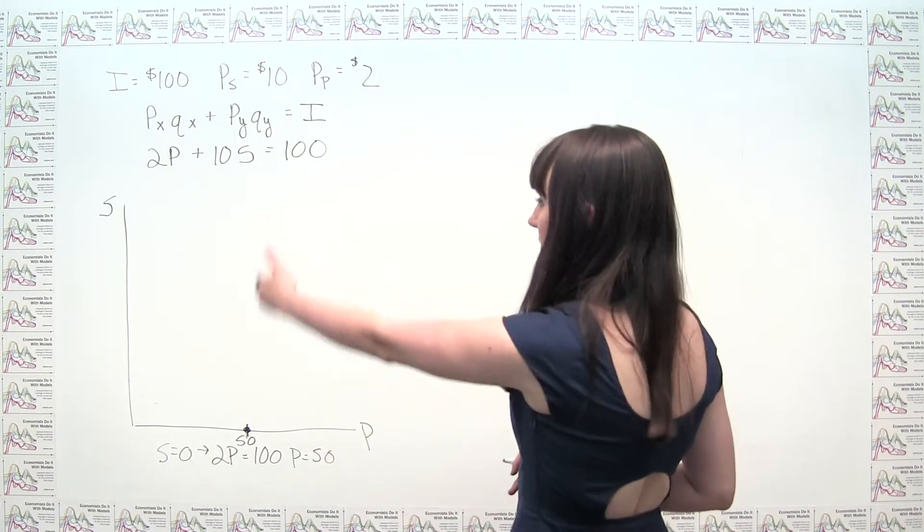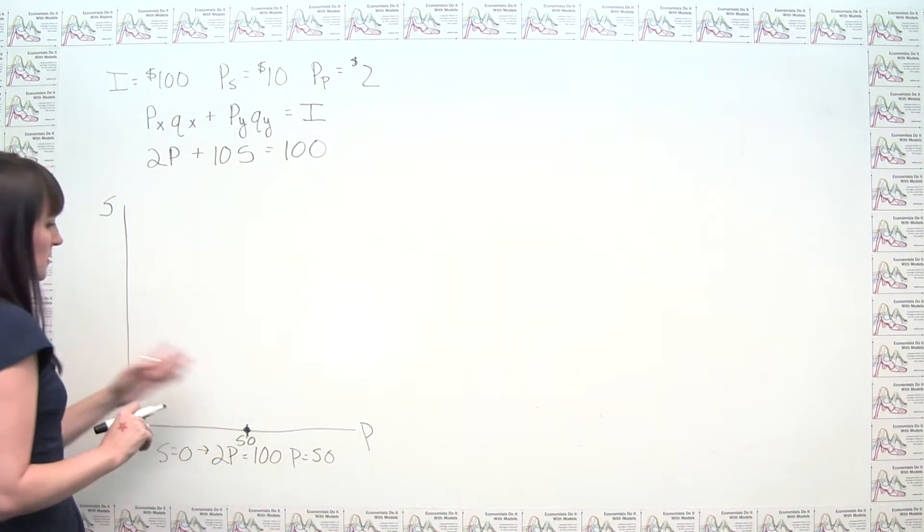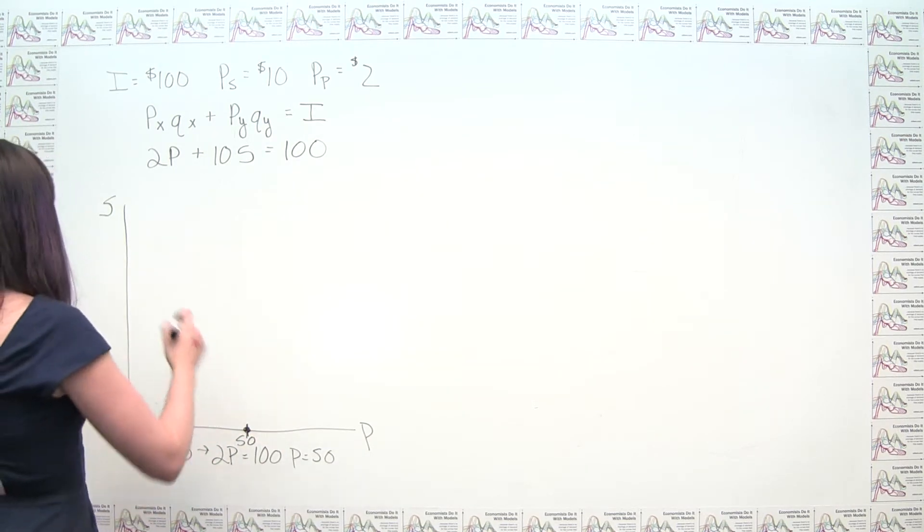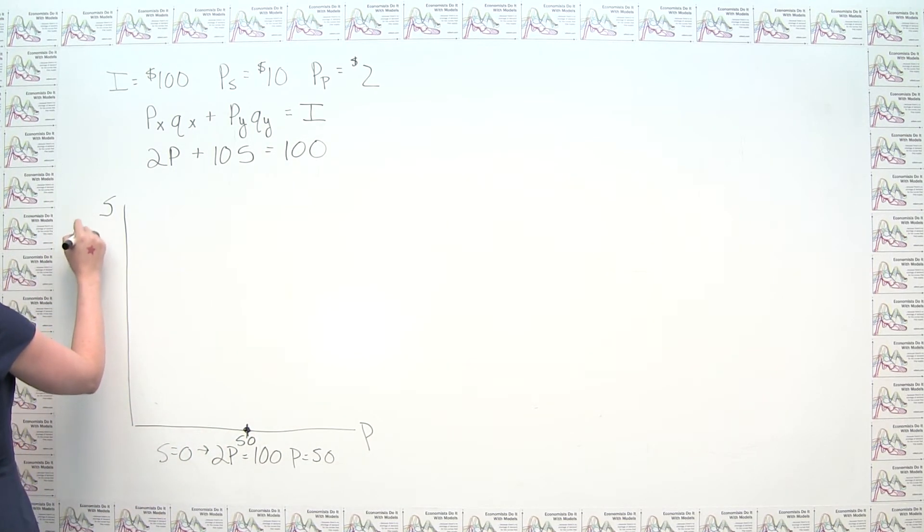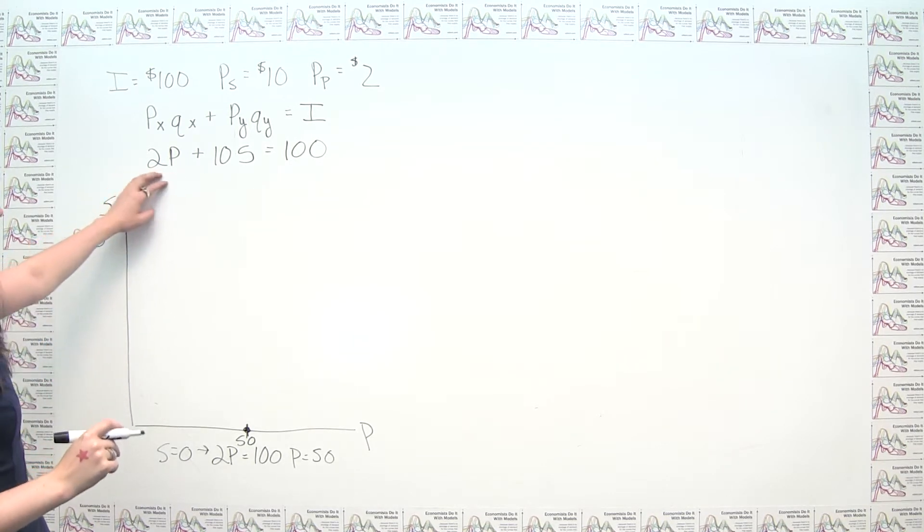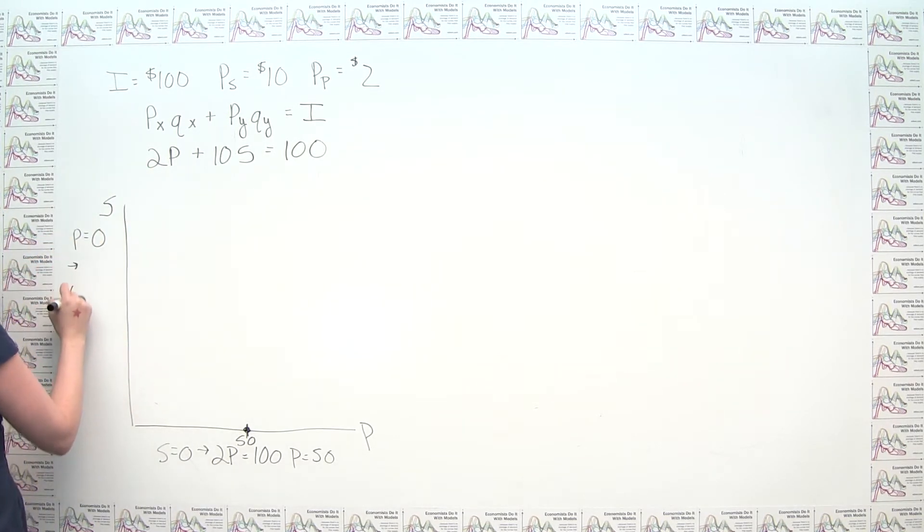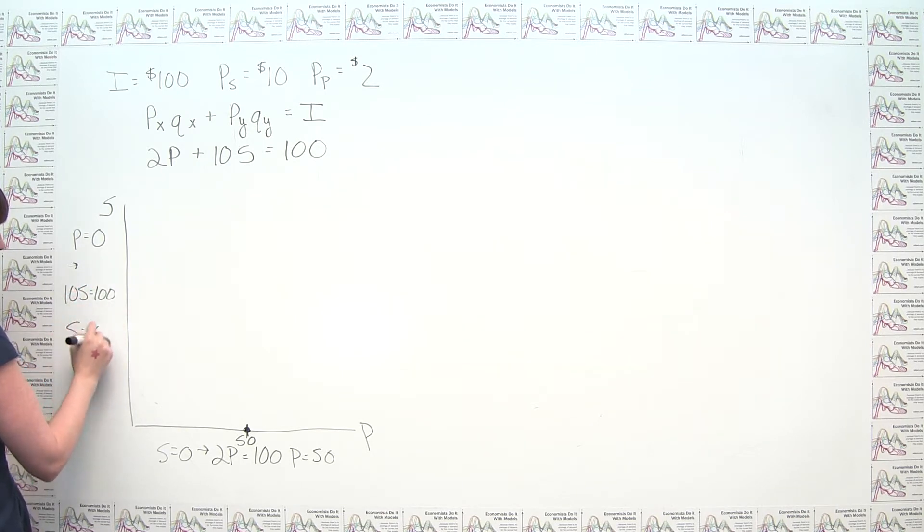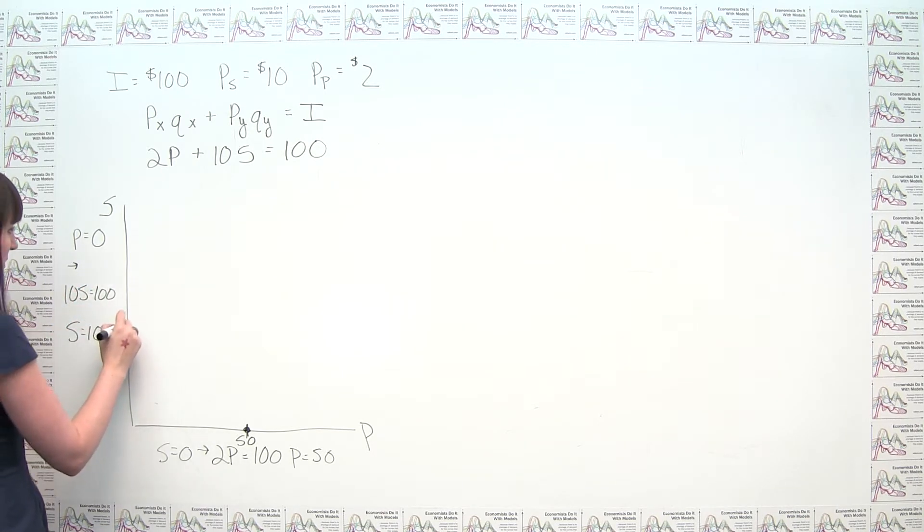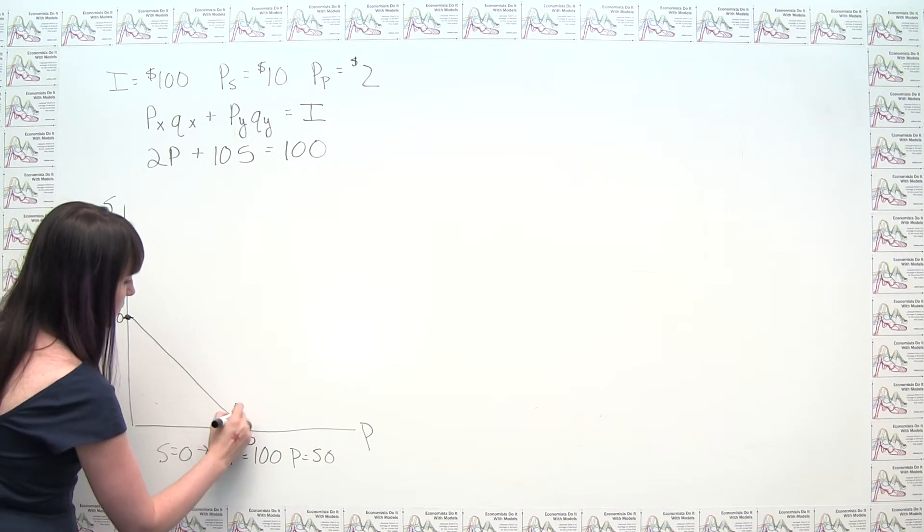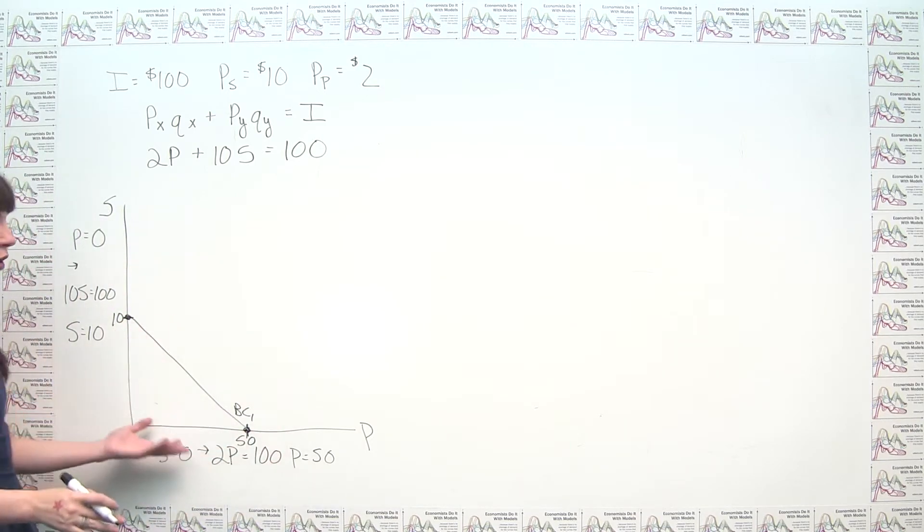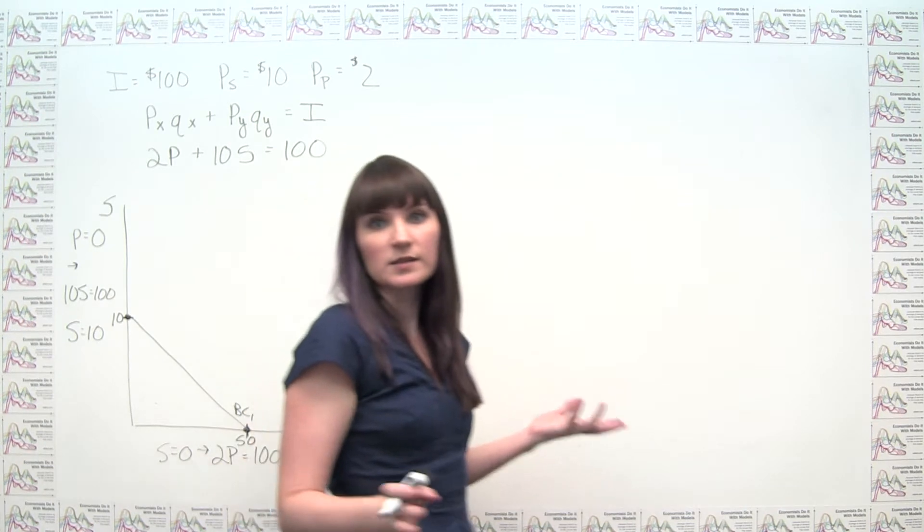So we can do the same thing on the other axis, but the point on the s-axis is where p is equal to 0. So if I were to say p equals 0, then this part here drops out, and I just get 10s equals 100, or s equals 10. And again, let me just say that maybe 10 is just here. It's not perfectly to scale, but then we have our budget line called BC1 for budget constraint 1 that looks like this here.